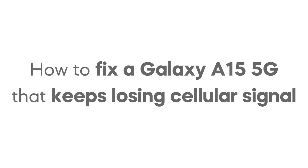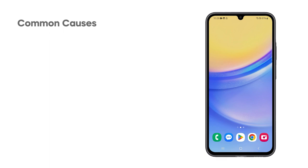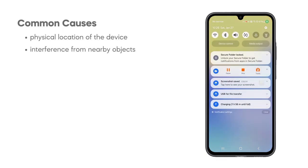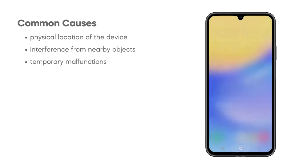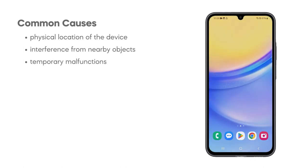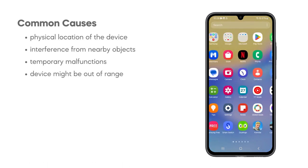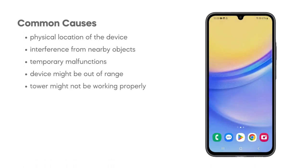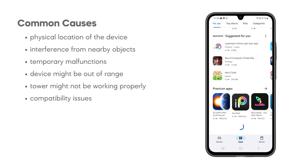A Samsung Galaxy A15 5G might start losing cellular signal due to various reasons. It could be due to the physical location of the device or interference from nearby objects, which can weaken or disrupt the signal. Temporary malfunctions in the device or the network can also cause signal loss. The device might be out of range of the 5G network, or the closest 5G tower might not be working properly. Compatibility issues between the device and the network could also lead to signal loss.